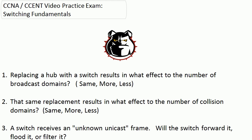Question one: replacing a hub with a switch results in what effect to the number of broadcast domains? Are you going to have the same number, more of them, or less of them? Question two: that same replacement results in what effect to the number of collision domains — same, more, or less?